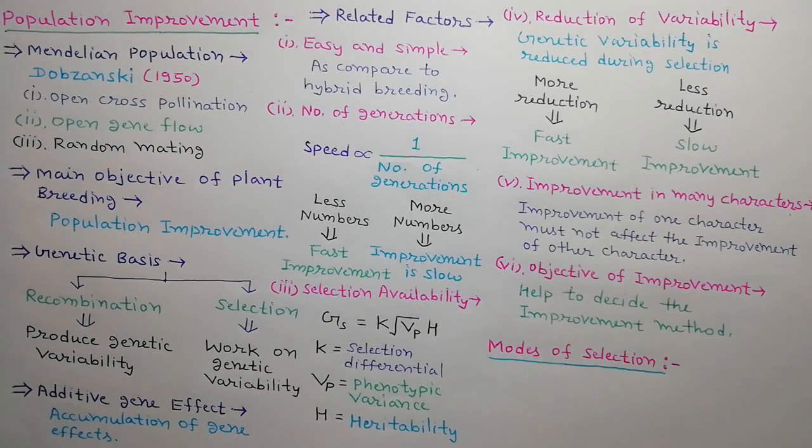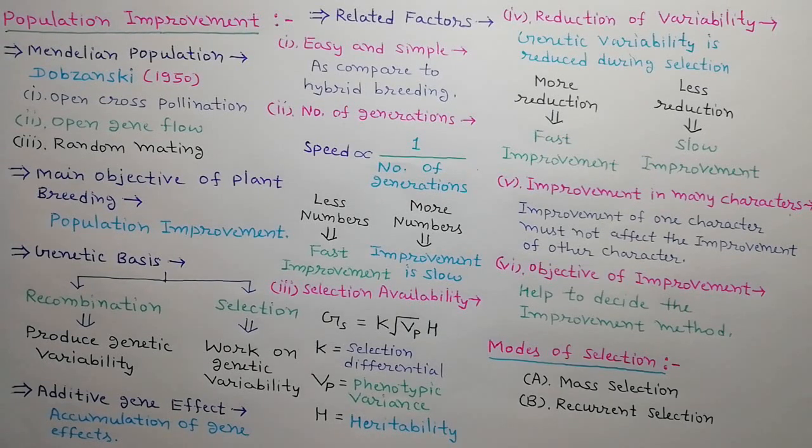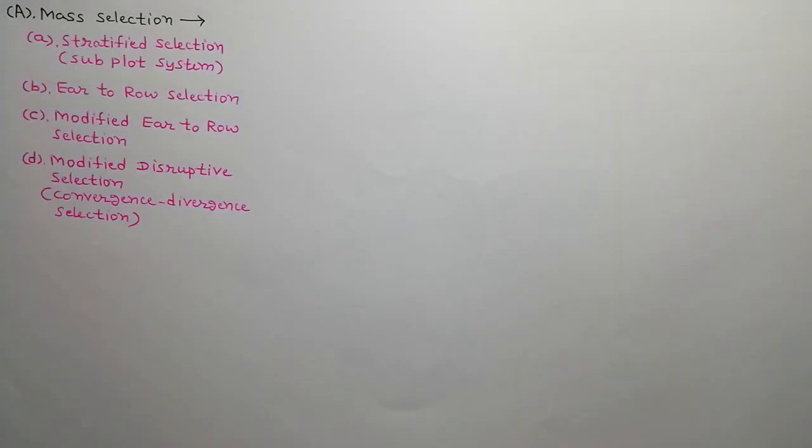Next we will discuss about the modes of selection. There are two types of methods used for population improvement: mass selection and recurrent selection. Mass selection has four modifications: stratified selection or subplot system, year to row selection, modified year to row selection, and modified disruptive selection or convergence-divergence selection.